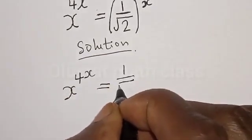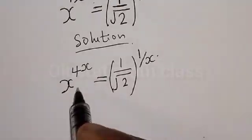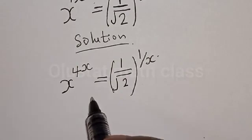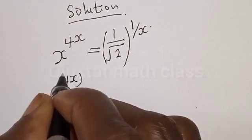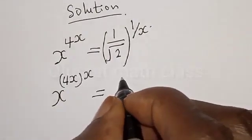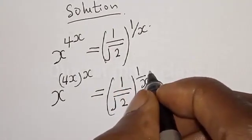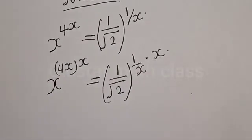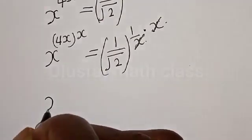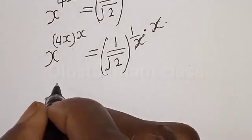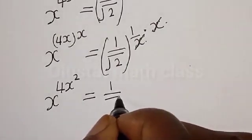Solution: we have the given equation x raised to power 4x is equal to 1 divided by square root of 2, raised to power 1 divided by x. Let's multiply the exponents of both sides by x. Then we have x raised to power 4x times x is equal to 1 divided by square root of 2 raised to power 1 divided by x, multiplied by x. This cancels, giving us x raised to power 4x², which equals 1 divided by square root of 2.